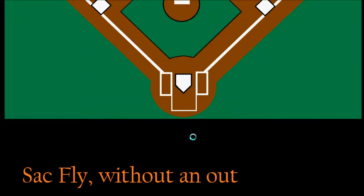Sacrifice flies are a fairly common occurrence in a ball game, but there is a play that is a lot less common involving sacrifice flies. It might make a pretty good trivia question for your friends: how can a sacrifice fly take place but there are no outs on the play? The batter gets credit for a sacrifice fly, but there are no outs.